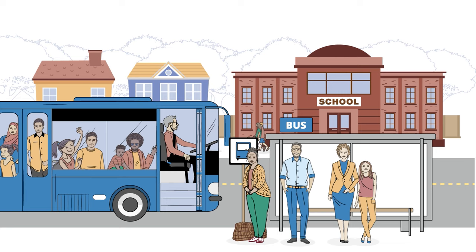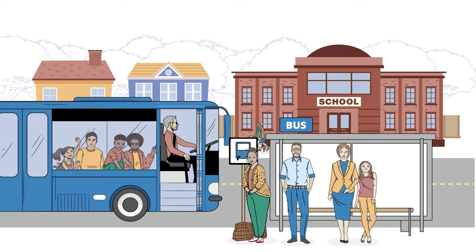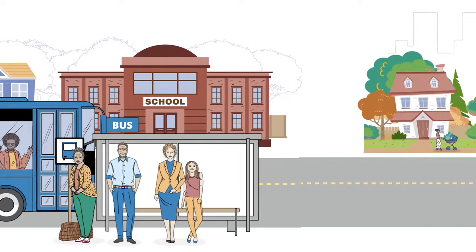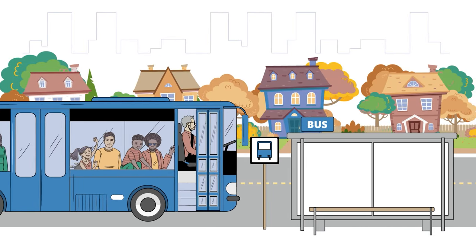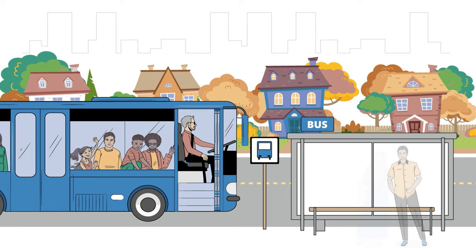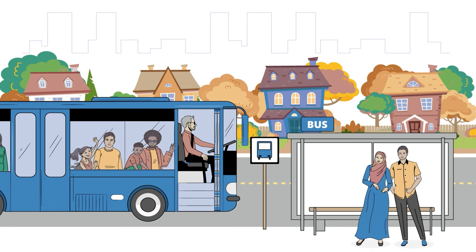Hey, AJ, look. That school is a lot bigger and nicer than ours. Yeah, they probably don't even have to share rulers and markers in class like we do. And their playground looks brand new. A lot of things in this neighborhood look different from our neighborhood. That's true, AJ. Some neighborhoods look different than others and have different resources too.